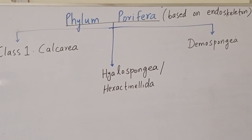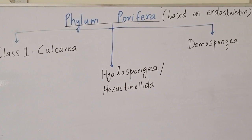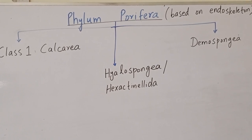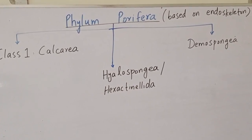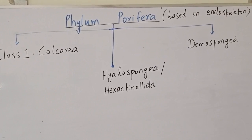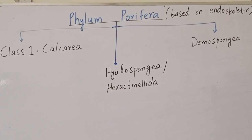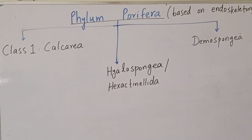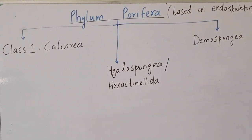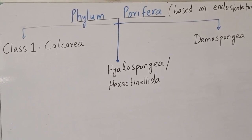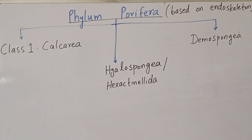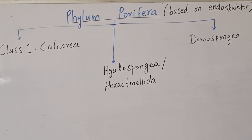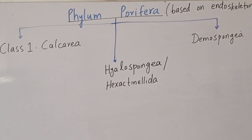Phylum Porifera, commonly known as sponges, are classified into three main classes on the basis of their endoskeleton. The endoskeleton of sponges is made up of spicules or spongin fibers. Spicules are of two types: those made up of calcium carbonate, known as calcareous spicules, and those made up of silicon dioxide, known as siliceous spicules.